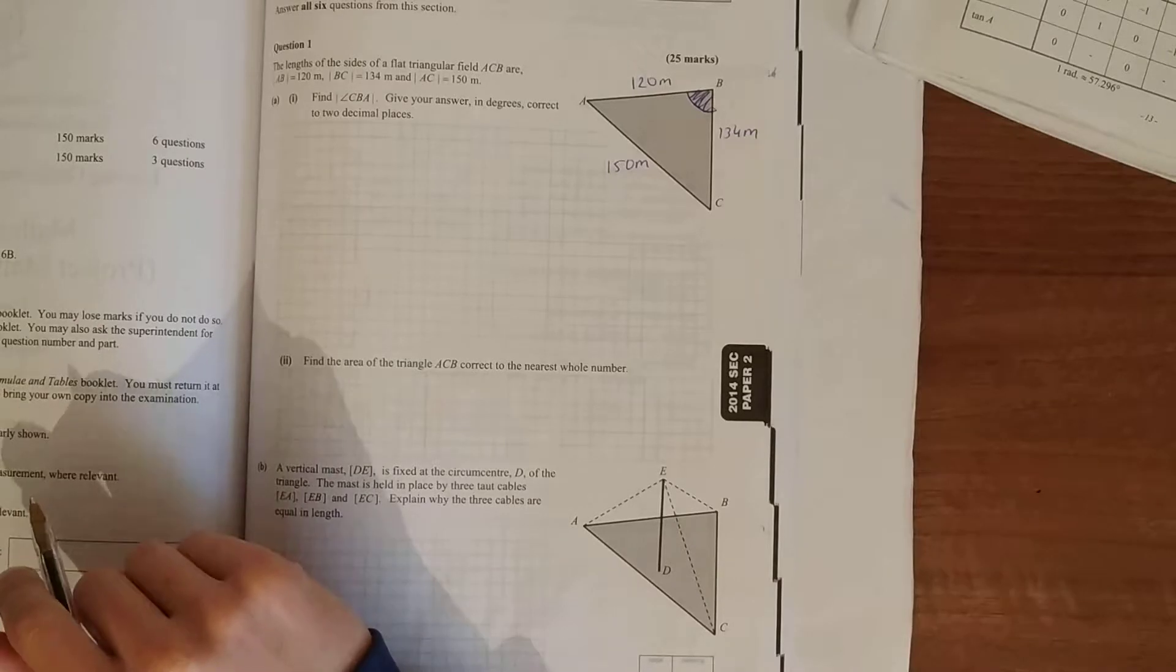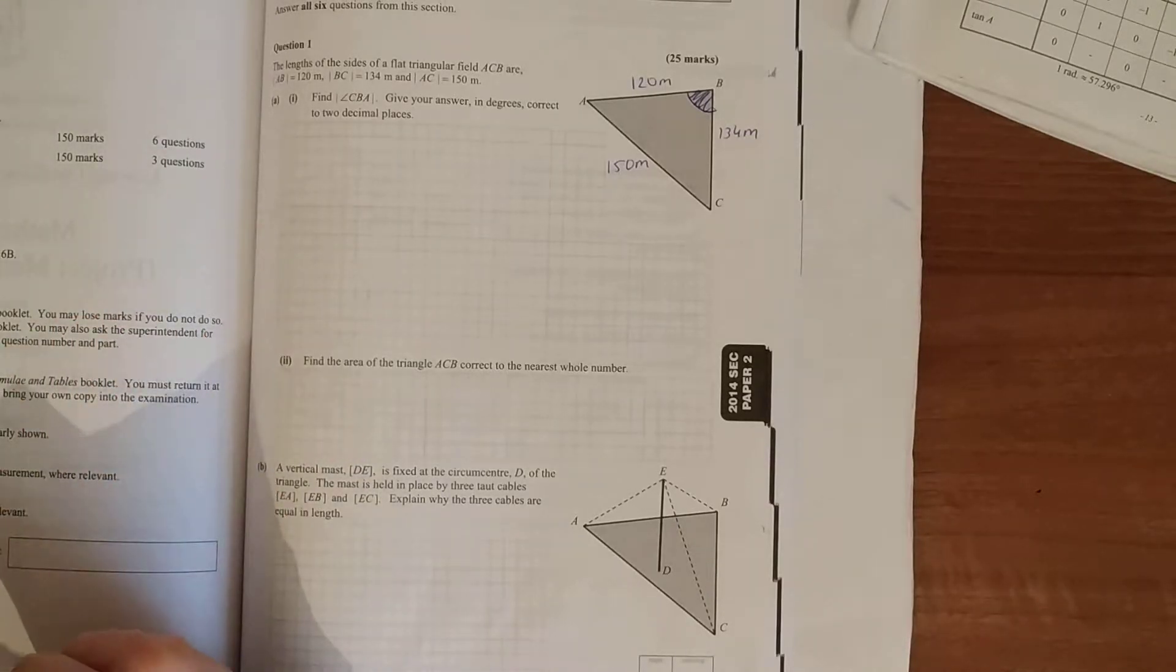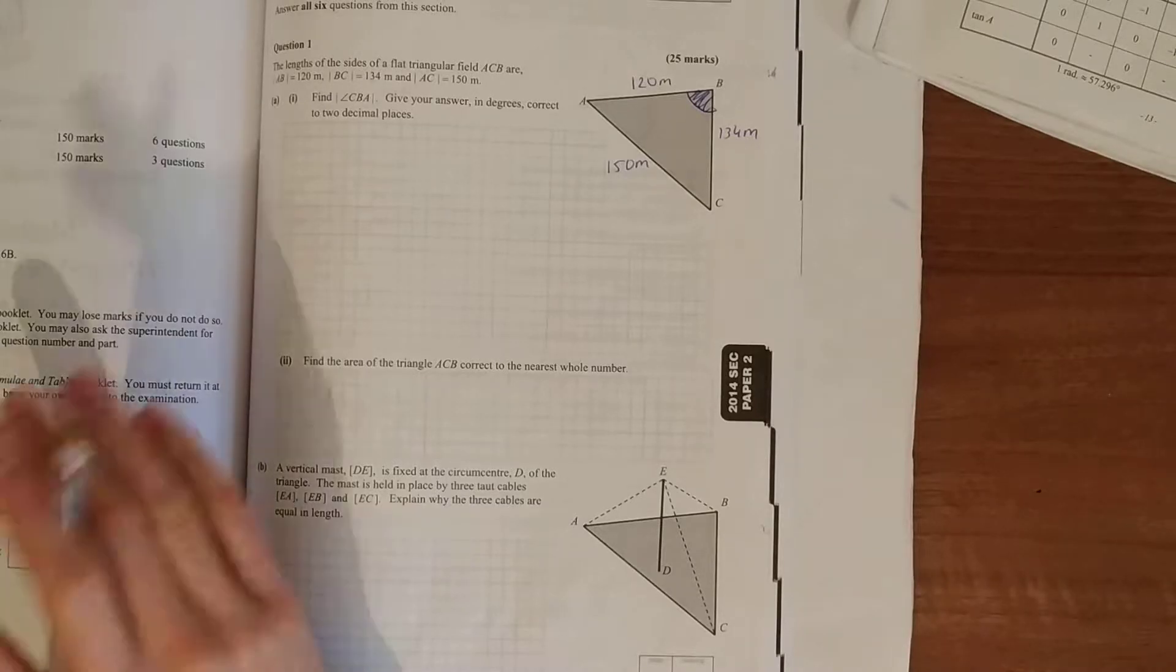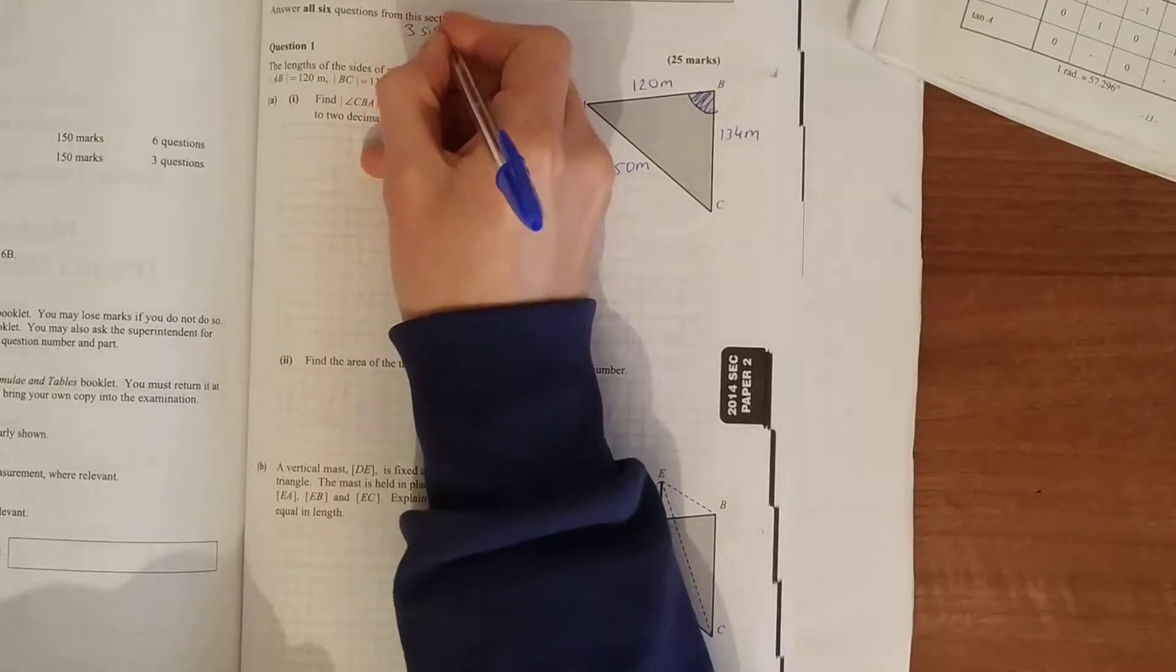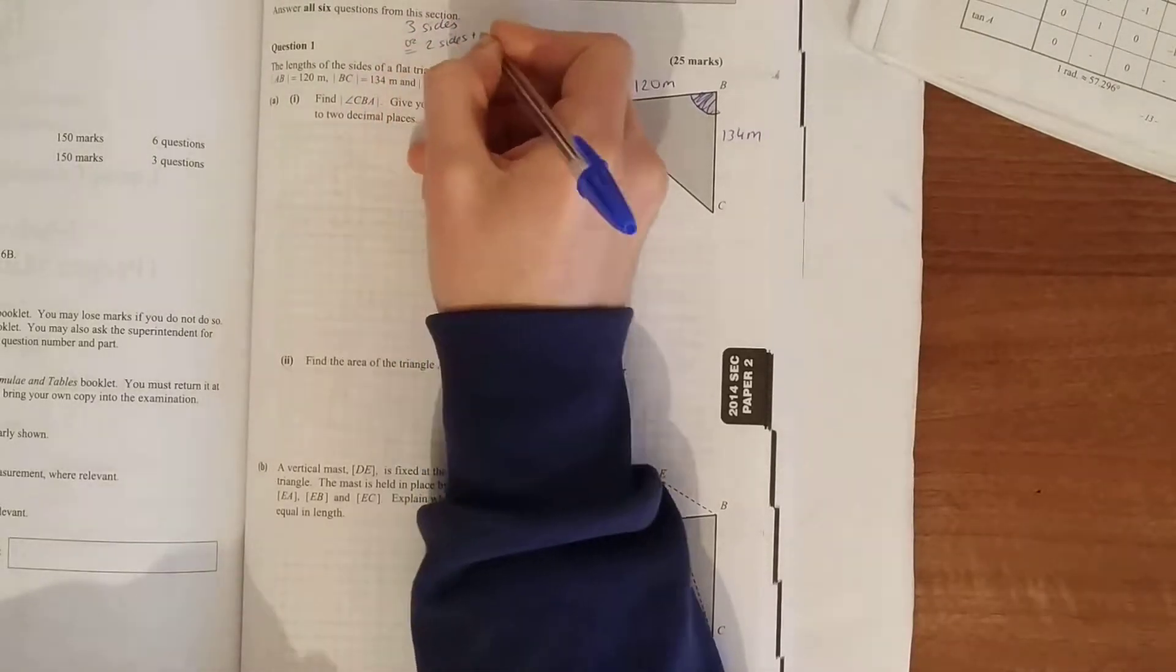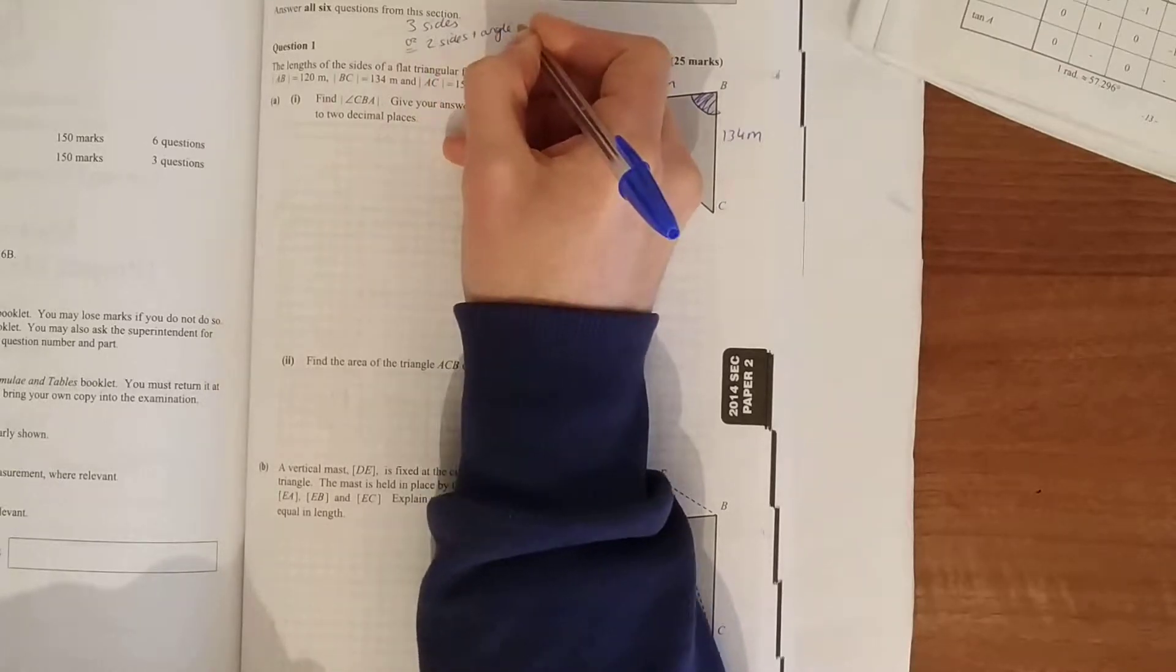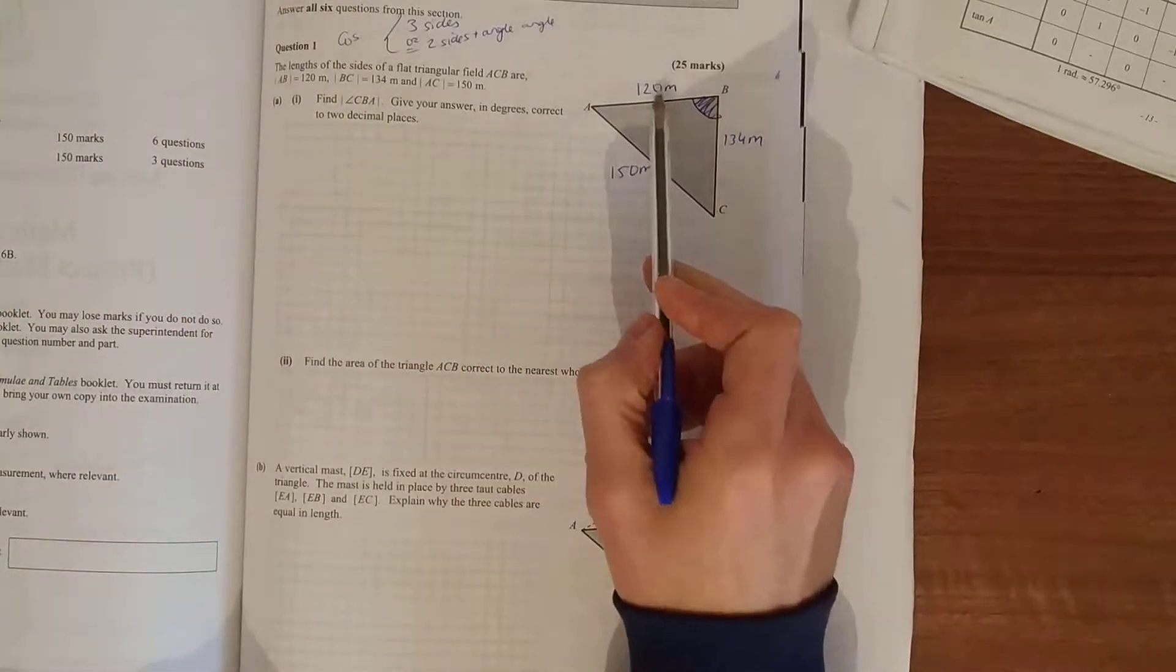So the only two possibilities could be the sine rule or the cosine rule. Now in the cosine rule, that's the one I think of first. You use the cosine rule if you're given three sides or two sides and an included angle between two sides.